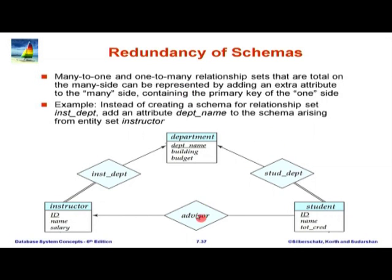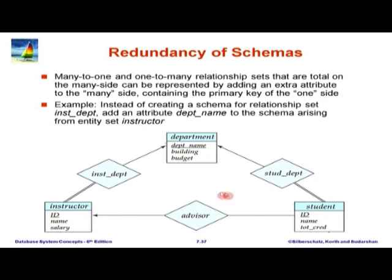What about the advisor table? We could have folded it into student but chose not to. One reason is that this relationship is not total — a student may have no advisor. If we had folded advisor into student, the advisor ID field would have a null value for students with no advisor. We prefer not to have null values unless forced to. Therefore, we kept this relationship as a separate relation called advisor, avoiding the null values.